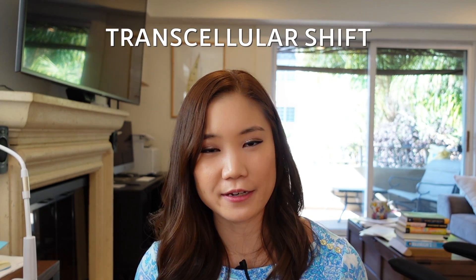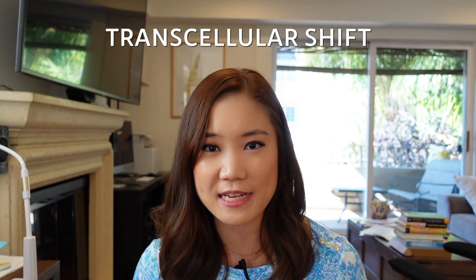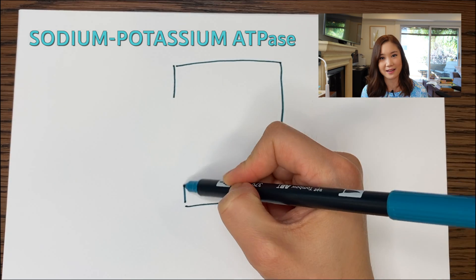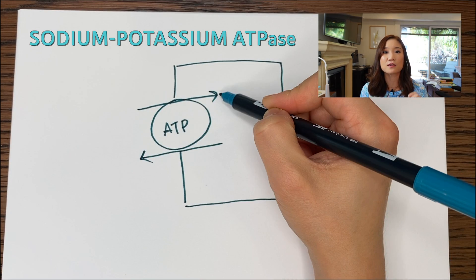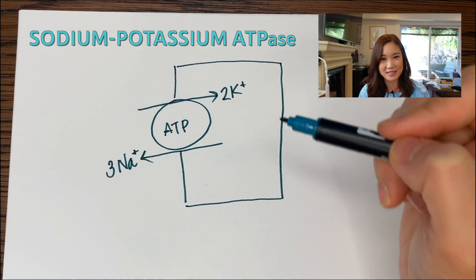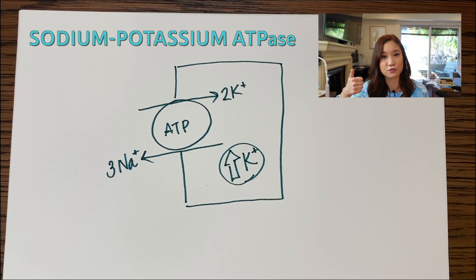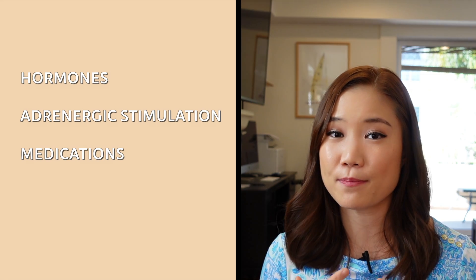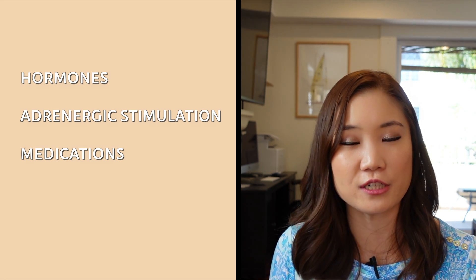Let's talk about the first way: transcellular shift. The vast majority of potassium in your body — 98% — is inside the cells, and only 2% is in your extracellular fluid. The body achieves this using the sodium-potassium ATPase pump, which sends two potassium ions into the cell while it brings three sodium ions out, keeping the potassium concentration inside the cell high while keeping it outside low. Various hormones, adrenergic stimulation, and medications can increase or decrease the activity of this pump, which would change the potassium concentration in the blood.